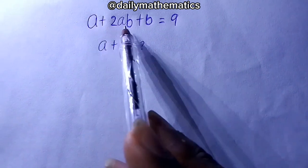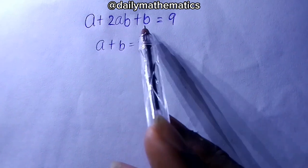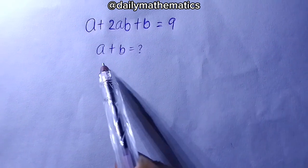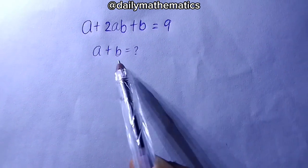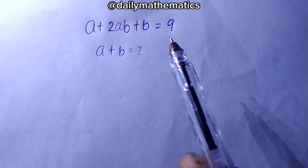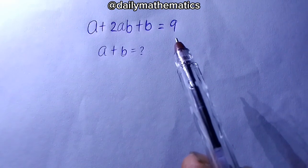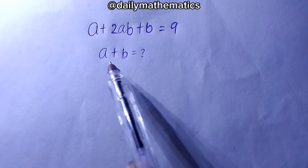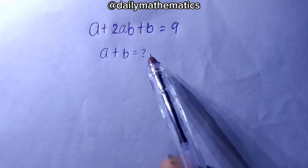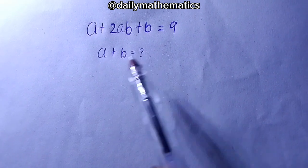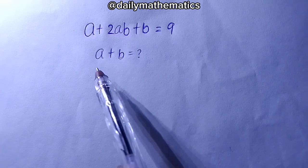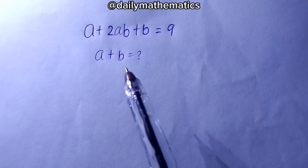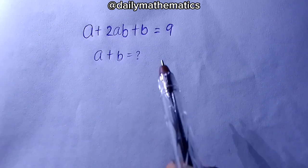a plus 2ab plus b equals 9 — find a plus b. Hi there, this is Daily Mathematics, and today we want to work out this nice question. We want to find a plus b, but before we can find a plus b, we must first find a and find b before we can add them together.